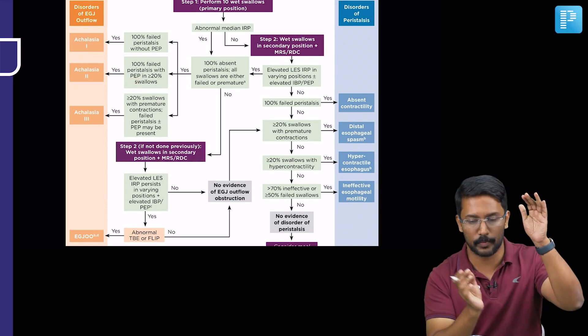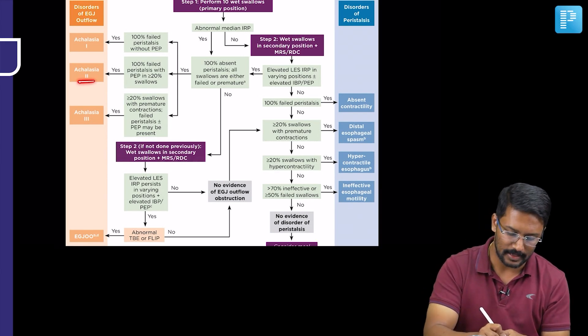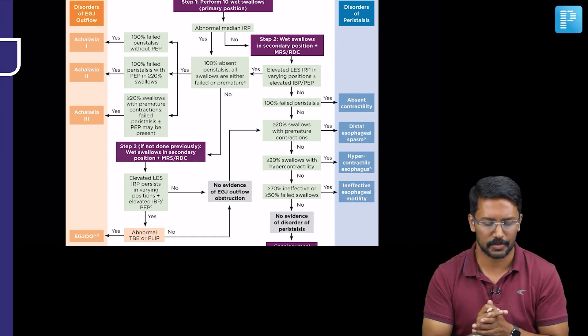So inside the esophagus from upper esophageal sphincter to the lower esophageal sphincter, there is buildup of pressure. That is what you call as achalasia cardia type 2 or achalasia cardia with PEP, panesophageal pressurization.